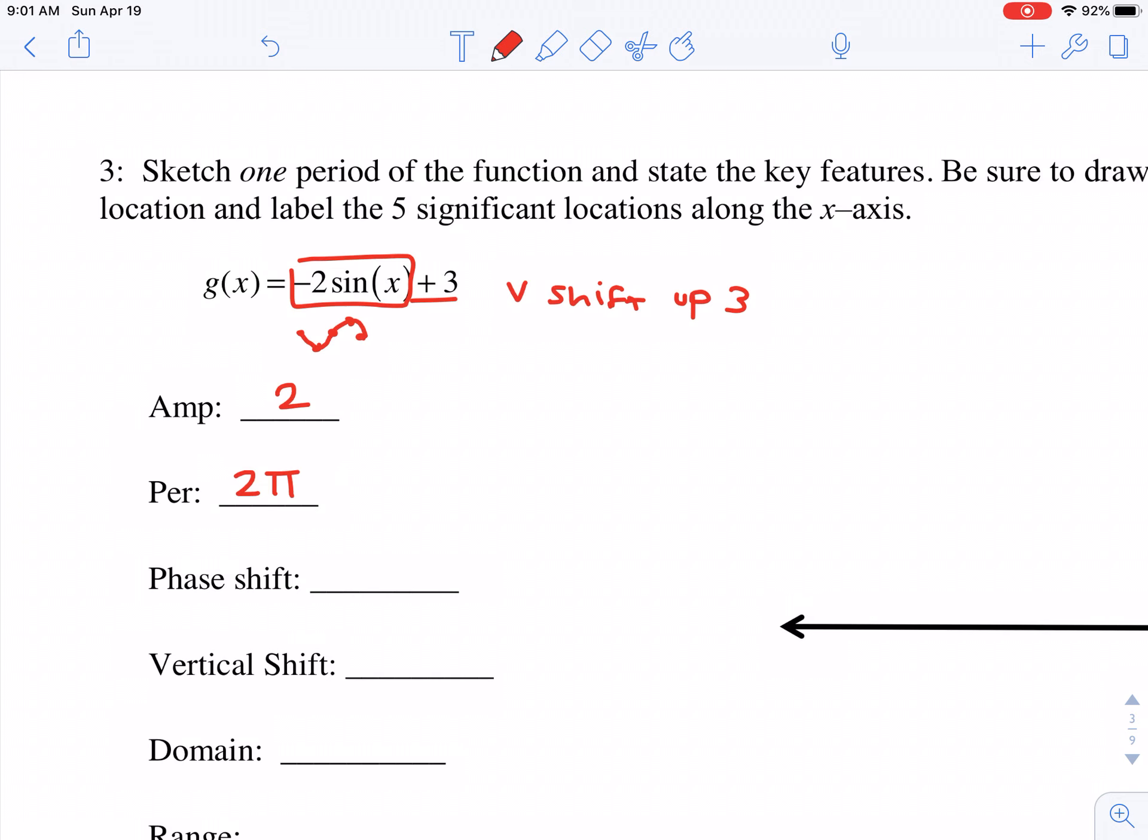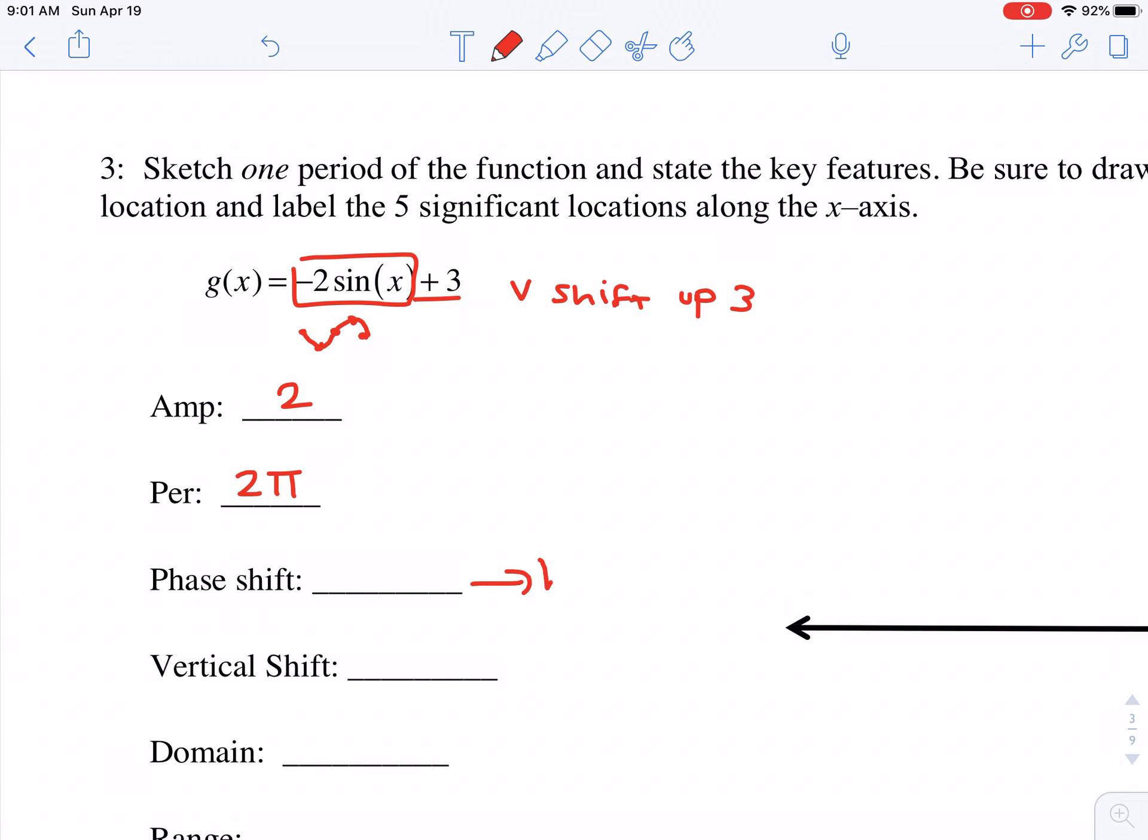Now a phase shift is what we call a horizontal shift. So we talked about that at the beginning here, and a horizontal shift would be our C value, but we do not have a C value. It just says X inside those parentheses. So we do not have a horizontal shift, so we could say zero, right? It shifts zero to the left or right, but for a vertical shift, now we see that D value. We do have a vertical shift up three.